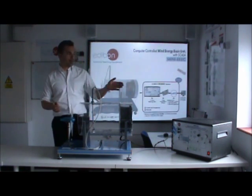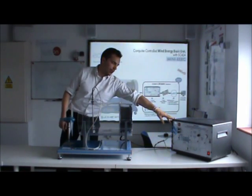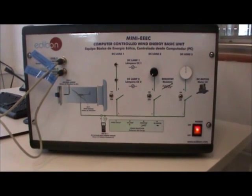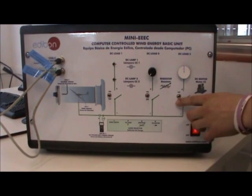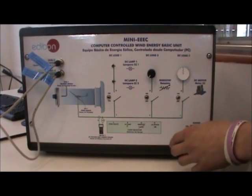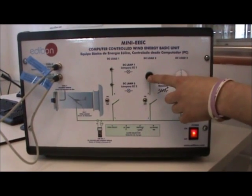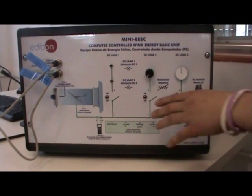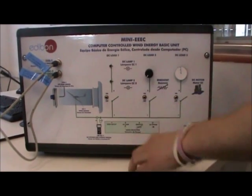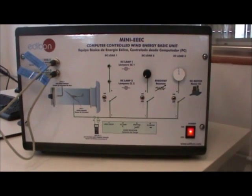In addition, they are able to change the load that is being powered by the wind turbine using the control interface. Using three switches, the user can control which load is being applied. You can either apply two DC lamps, a variable resistor, or a DC motor. If you leave all of the switches in the off position, this leaves it in an open circuit, which allows you to obtain open circuit voltage.